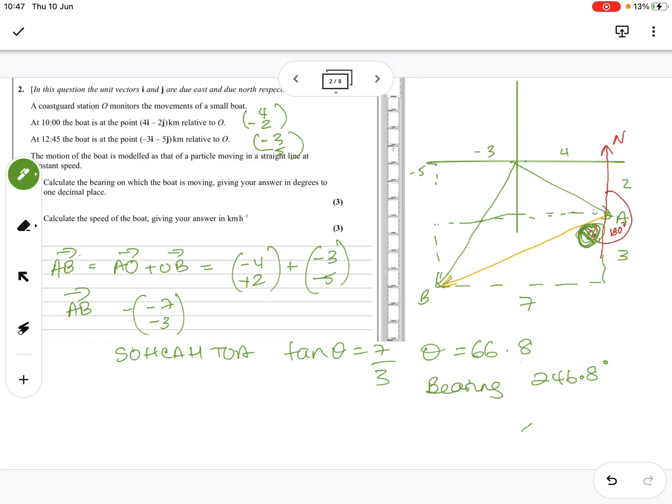Next part of the question, we've got calculate the speed of boat. Okay, so we need to find how far he's traveled. So B involves finding the magnitude of AB, which is just, well, you can see from here, it's just Pythagoras. So that squared plus that squared, square rooted, will give us that.